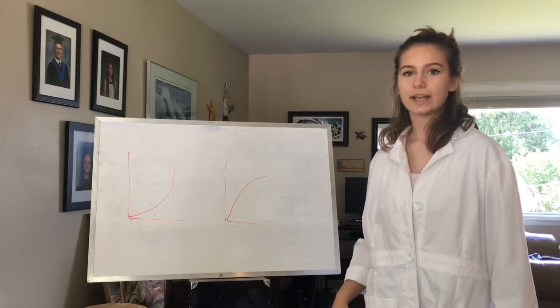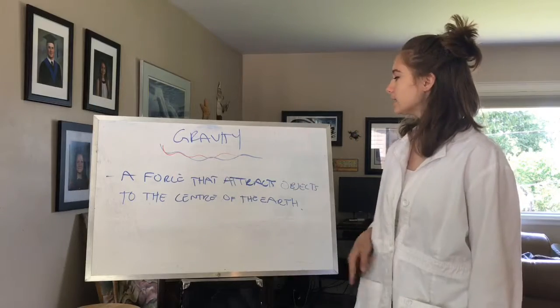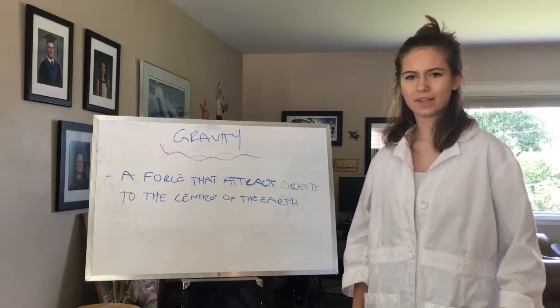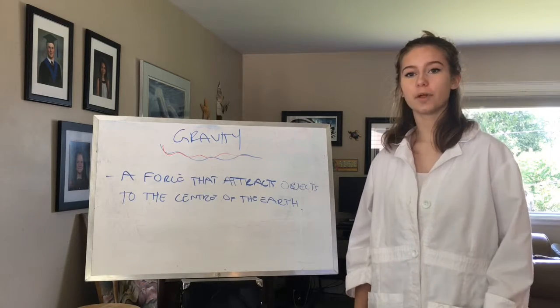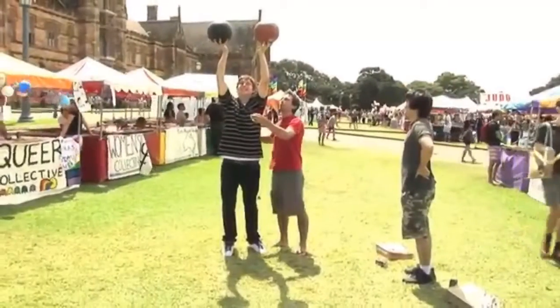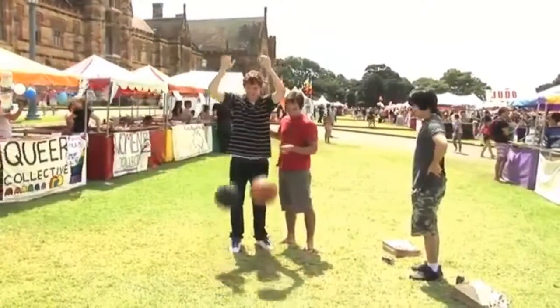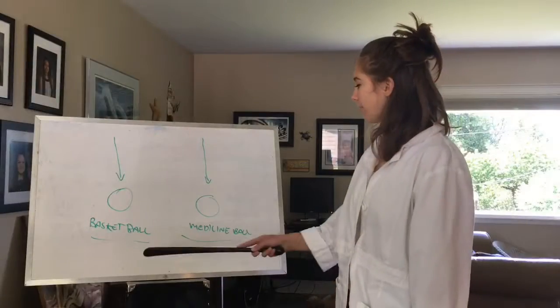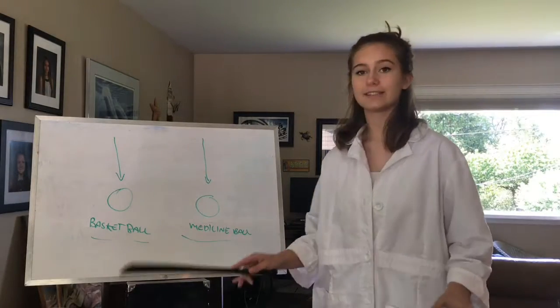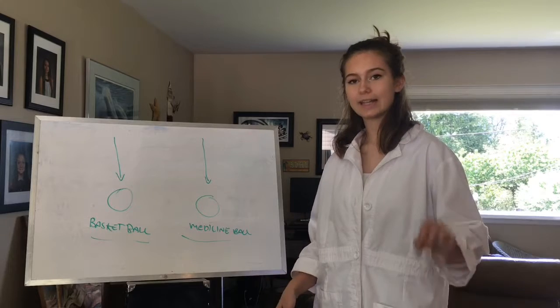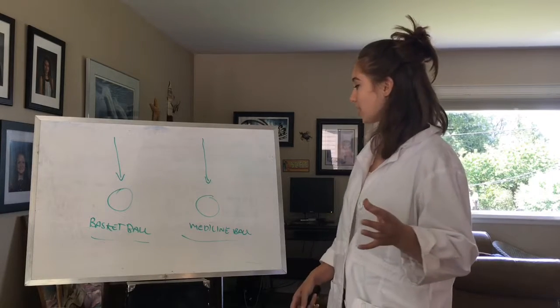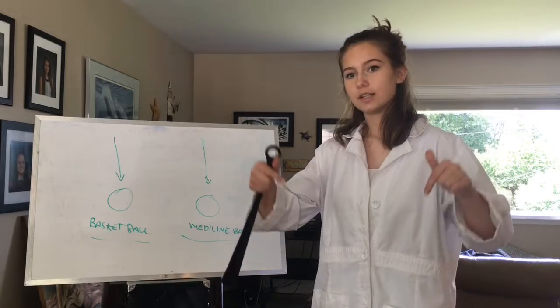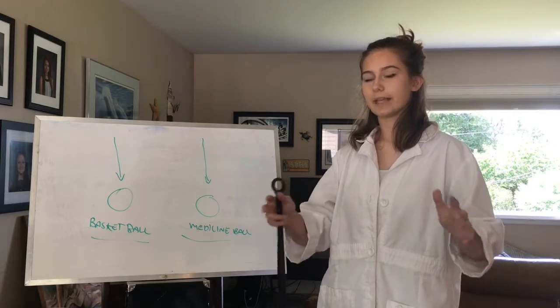Next up, let's take a look at gravity and how it affects motion. Gravity is a force that attracts objects to the center of the earth. You're probably wondering, how does gravity affect motion? Well, take a look at the following video. Two, one. The basketball and the medicine ball, being dropped at the same time, hit the ground at the exact same time. This is possible because of gravity. Gravity was pushing both objects toward the ground at the same speed.